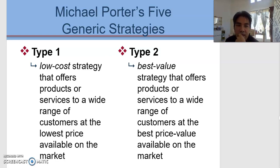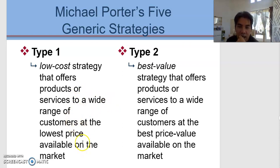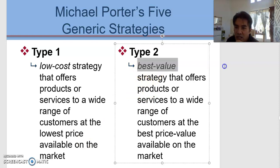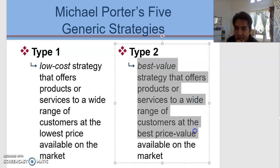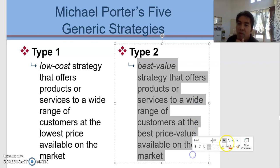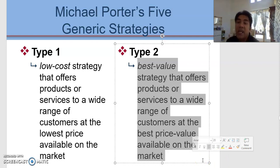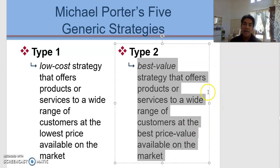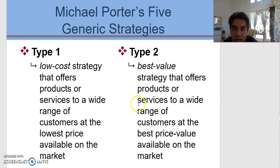Under cost leadership, we have Type 1 and Type 2. Type 1 is a low cost strategy that offers products or services to a wide range of consumers at the lowest price available on the market — like household items. Type 2 is the best value strategy that offers products or services to a wide range of customers at the best price value available on the market. We can associate this with AirAsia and 'Now Everyone Can Fly' — that is a good example of a Type 2 strategy.